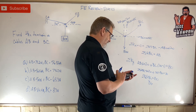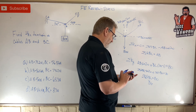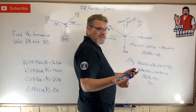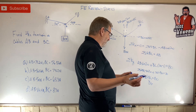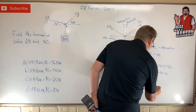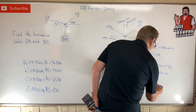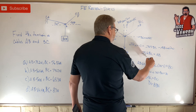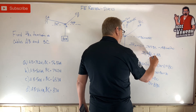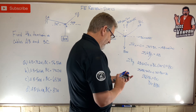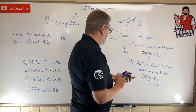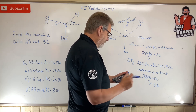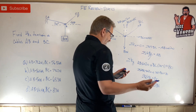BC equals 80 divided by 0.964 — answer equals 82.96. We can call that 83. Then plug that back in: AB equals 0.752 times 83. That gives us 62.4.